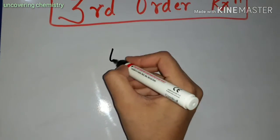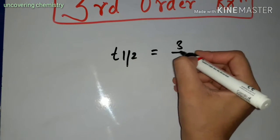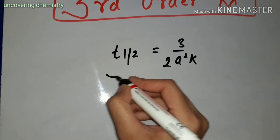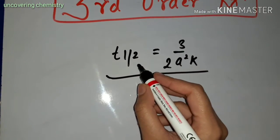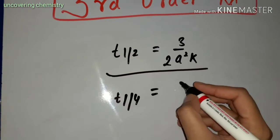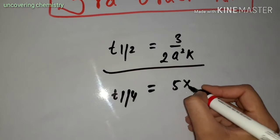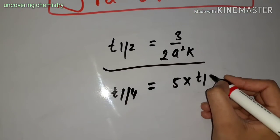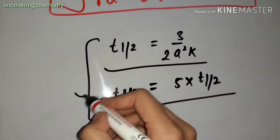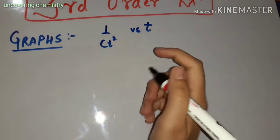Next comes the T-half for the third order reaction. The half-life for the third order reaction is 3 divided by 2 A-naught squared times K3. The quarter-life period for the third order reaction is equal to 5 times T-half. These are the quarter-life and half-life formulas for the third order reaction.